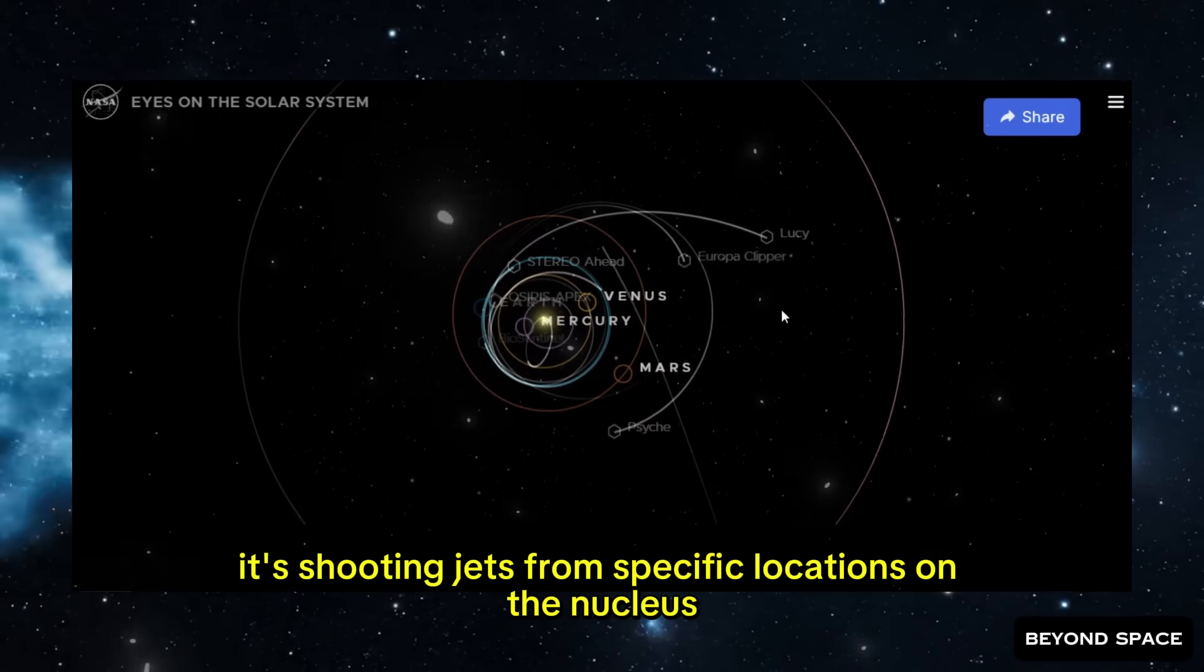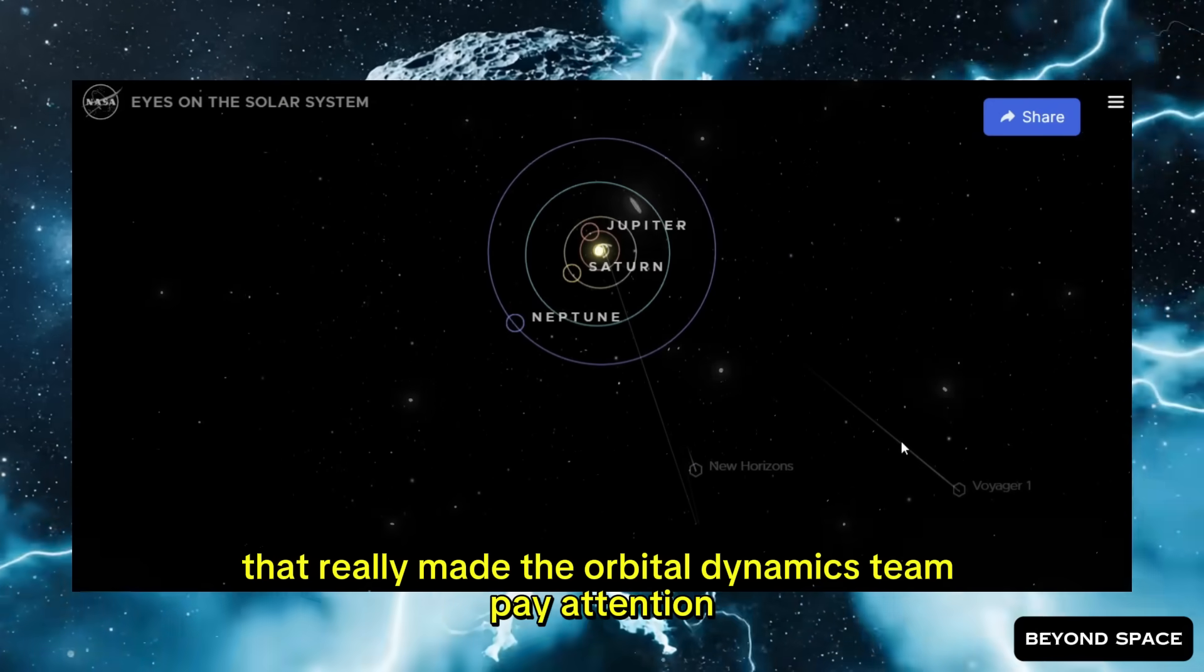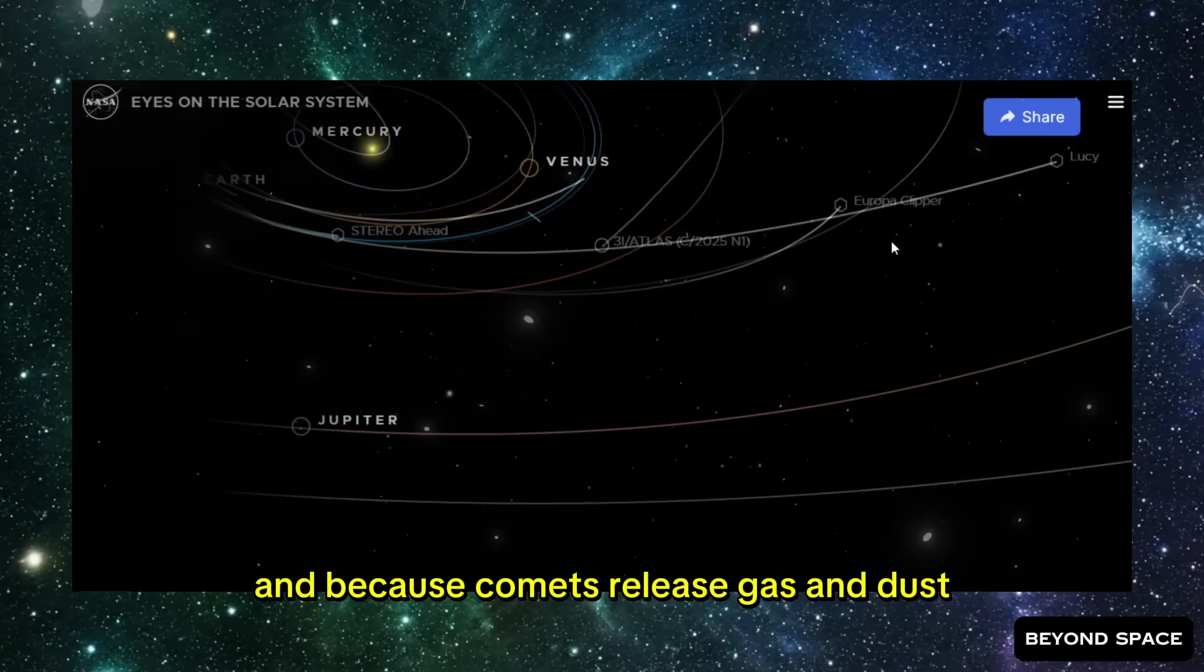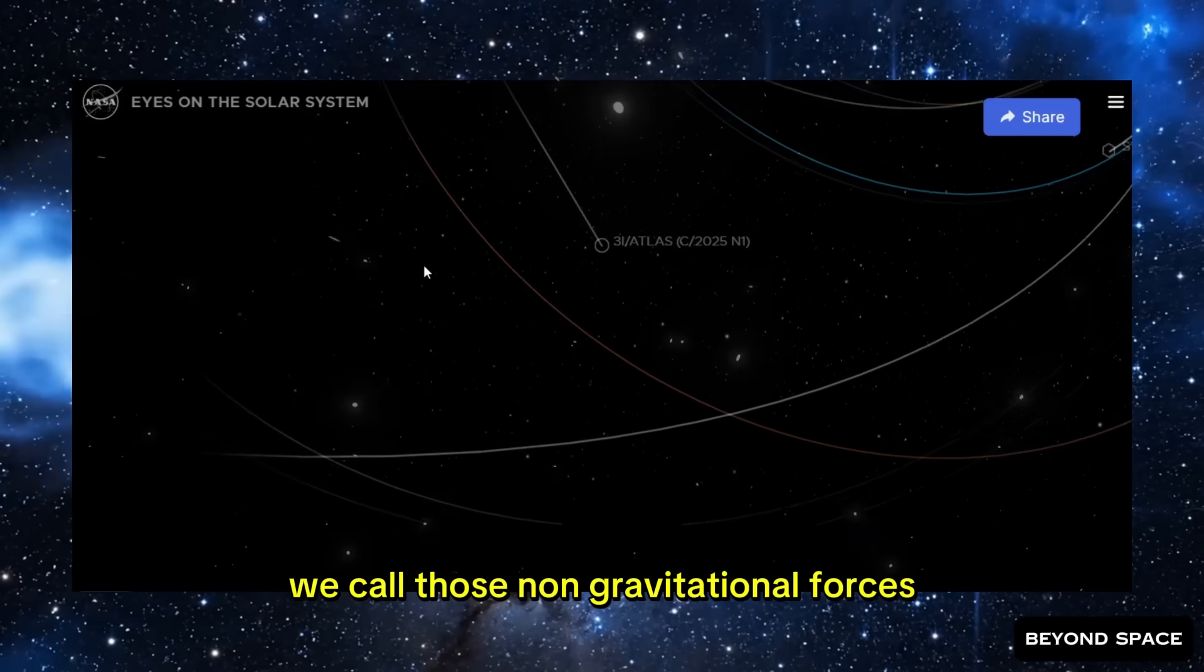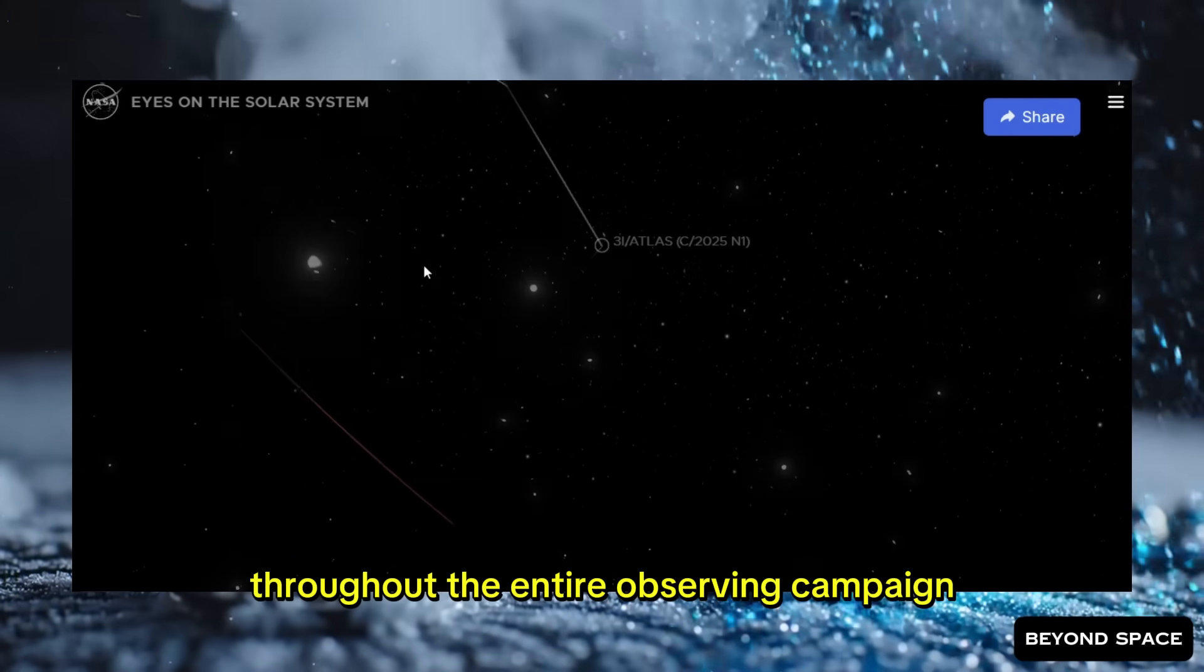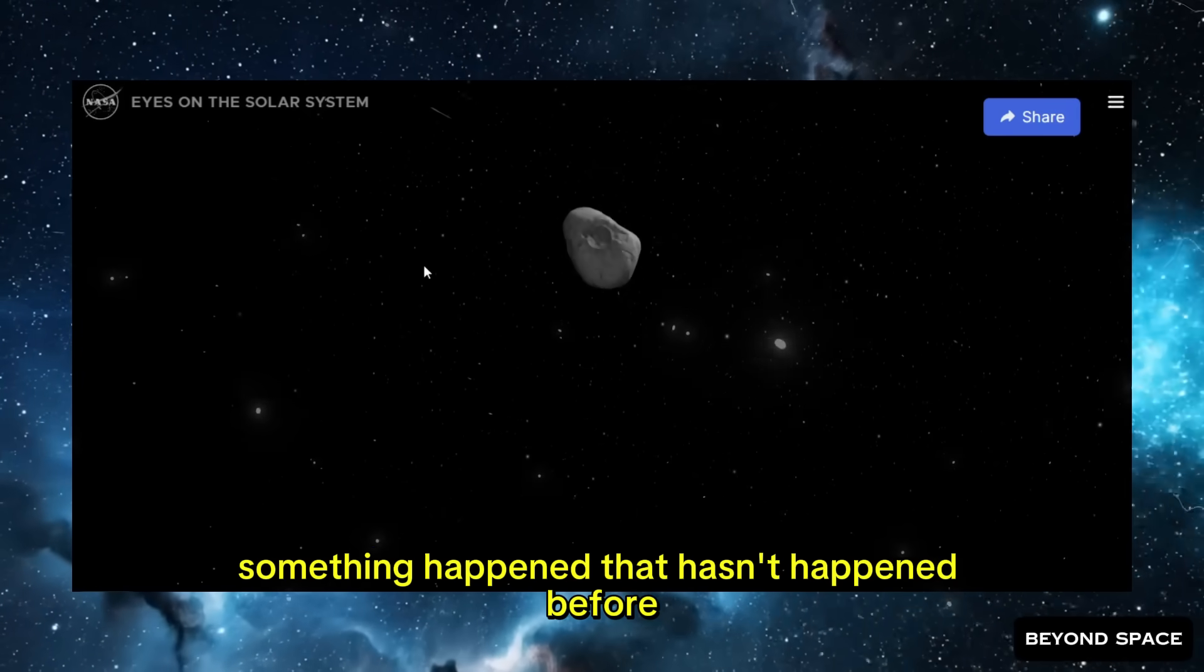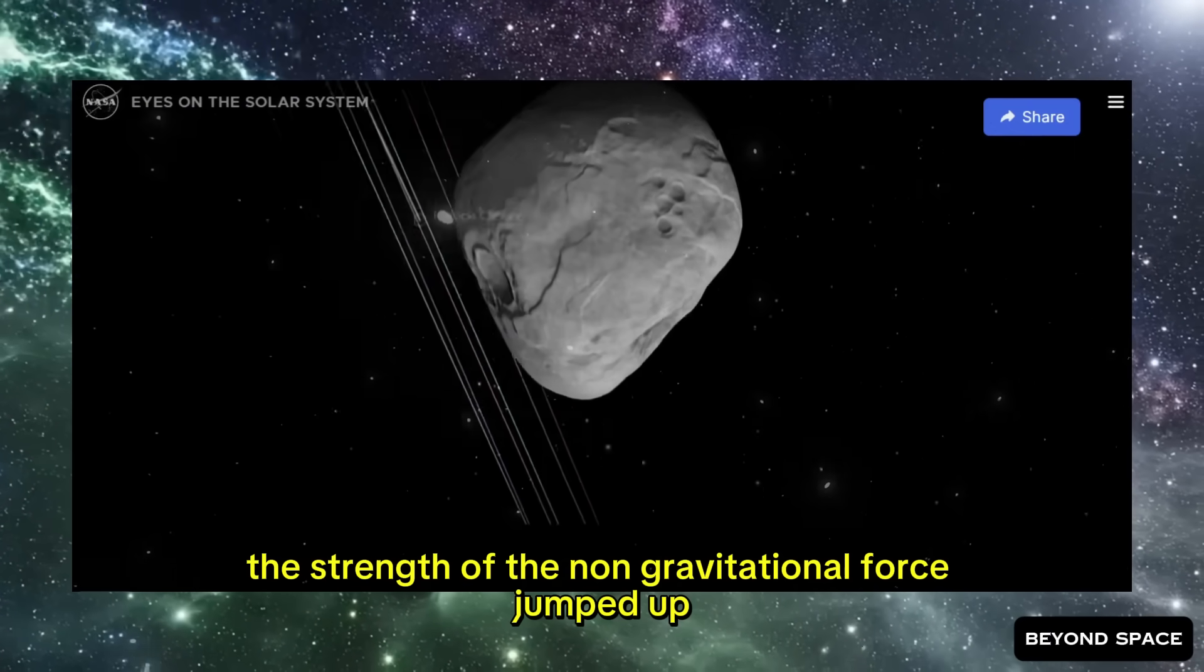But here's where this story takes another turn, and this is the part that really made the orbital dynamics team pay attention. Every time they get new position measurements for the comet, they feed that data into their orbital models. And because comets release gas and dust, they don't just follow a perfect gravitational path. They get these tiny extra pushes from the outgassing. We call those non-gravitational forces. For 3-Eye Atlas, they've been tracking these non-gravitational forces throughout the entire observing campaign, watching how the comet's outgassing is nudging it off its purely gravitational trajectory. And today, when they updated the models with the latest positions, something happened that hasn't happened before. The magnitude of that push, the strength of the non-gravitational force, jumped up.